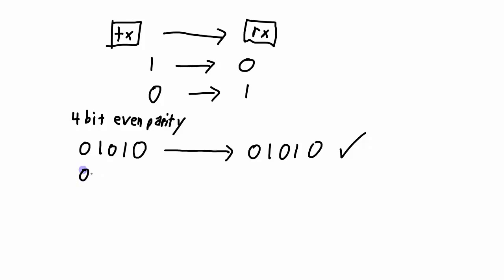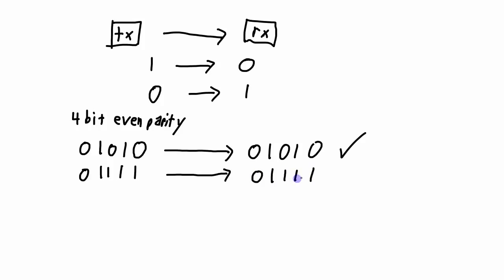If the data to transmit is 0, 1, 1, 1, there are three ones. Since we want an even number, we add a parity bit of 1, giving us four ones total. That gets transmitted to the receiver, and if the receiver receives 0, 1, 1, 1, 1, it counts four ones, which is even, so that data is considered good.